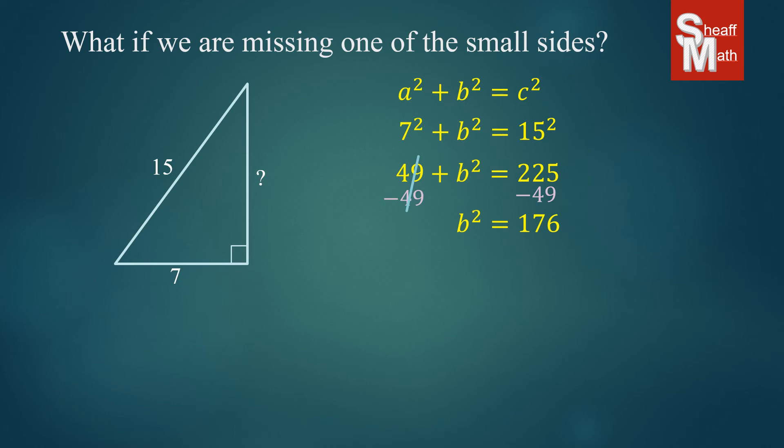And to solve for B, we square root both sides. And we end up with B equals the square root of 176. So that is our exact answer. If you want to approximate it, put it into the calculator, it comes out to about 13.27, rounded to the hundredth, and you can see that that looks like it makes sense as far as our sides.